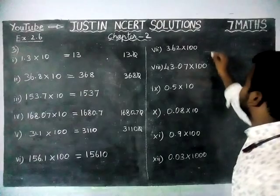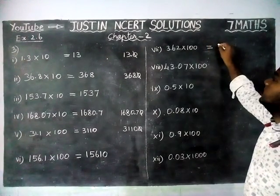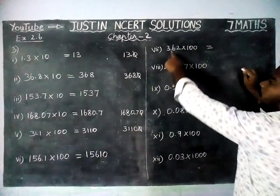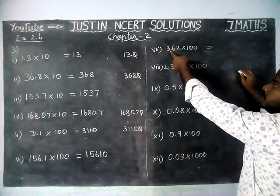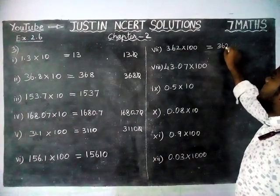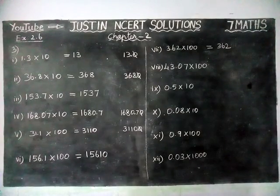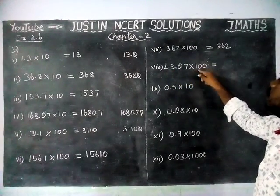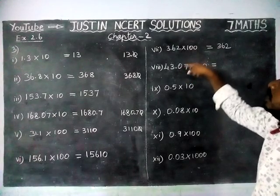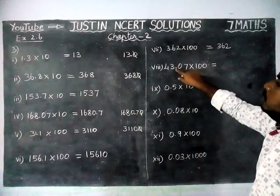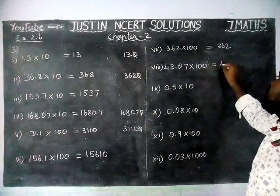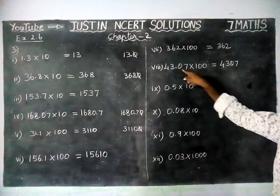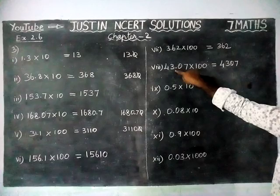The 7th question: 3.62 into 100. Here we have two zeros and two decimal points, so we are going to move two steps right side. So 362 is the answer. The 8th question: 43.07 into 100. Here we have two zeros and two decimal points. When multiplying with 100, we move right side two steps. So the answer is 4307.